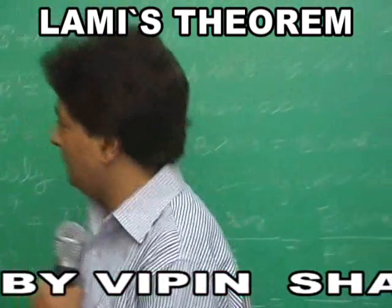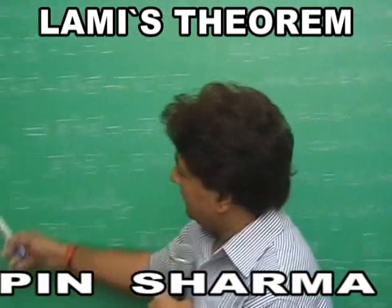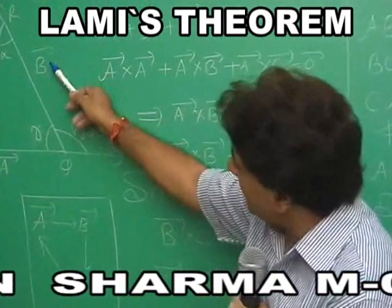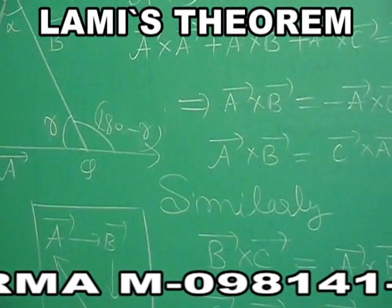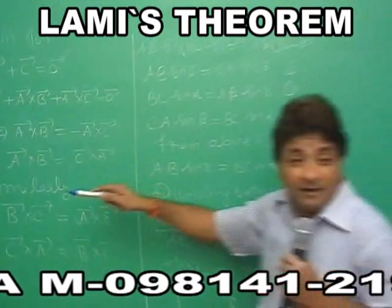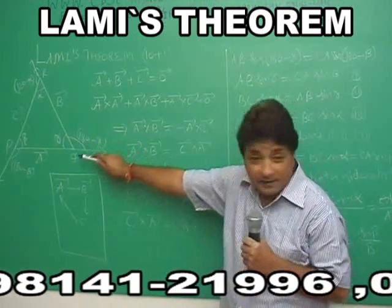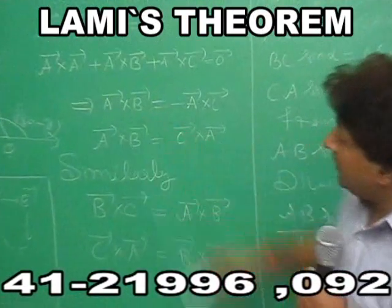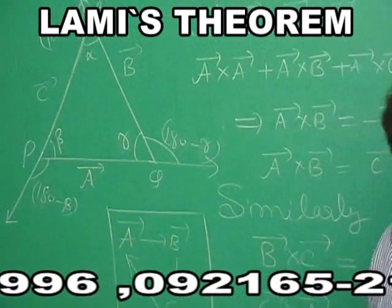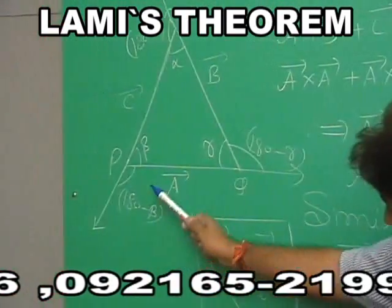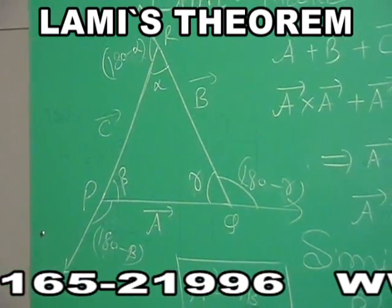Now, what do you find? Between vector a and vector b, the angle is 180 minus gamma. We will take the exterior angle, we will not take the interior angle. Similarly, the angle between b and c is 180 minus alpha. Angle between a and c is 180 minus alpha.